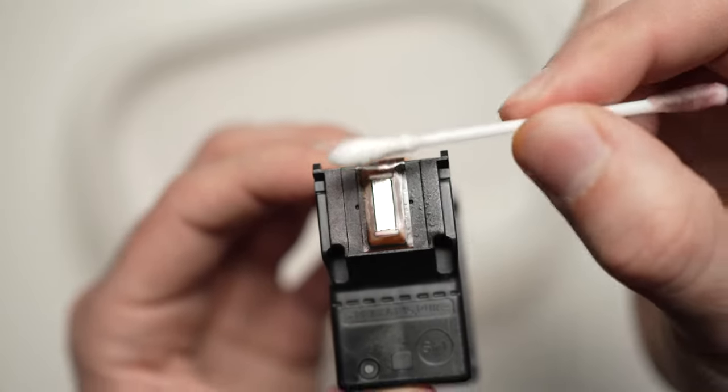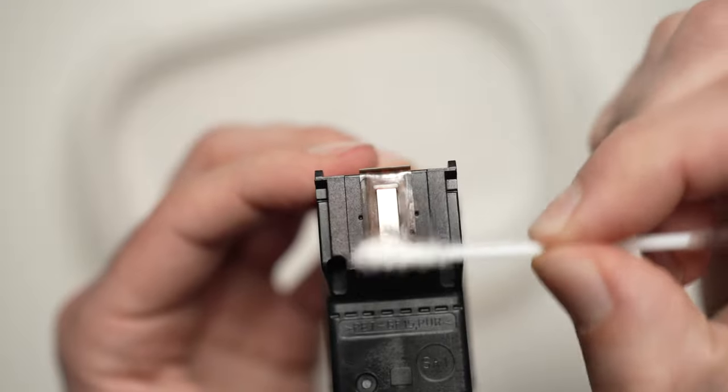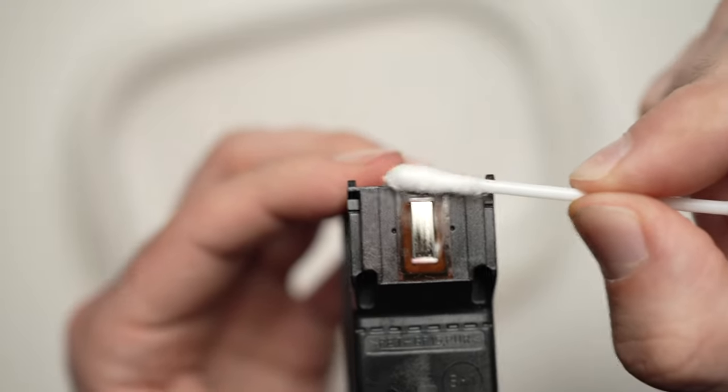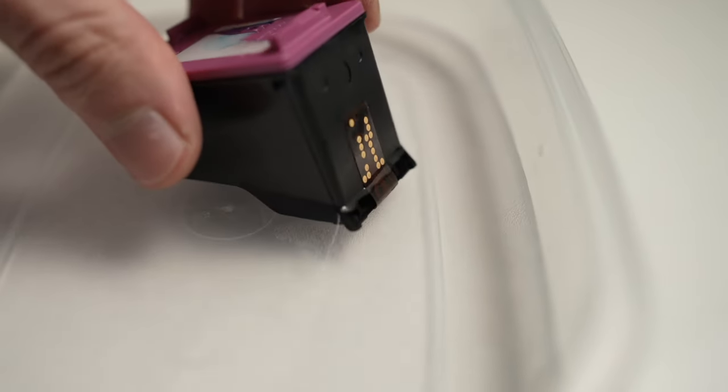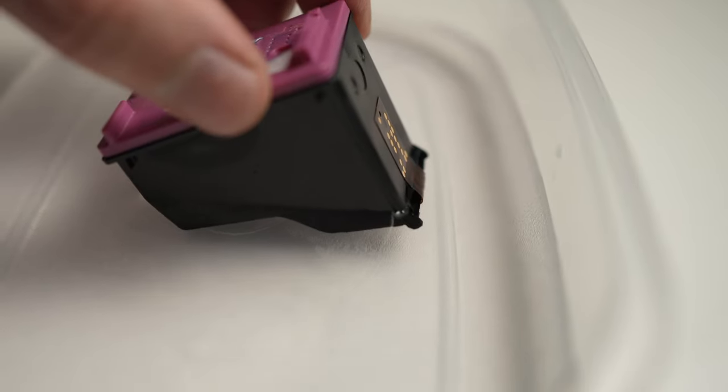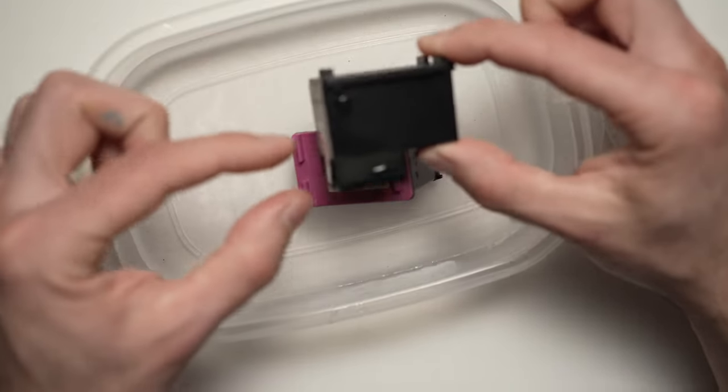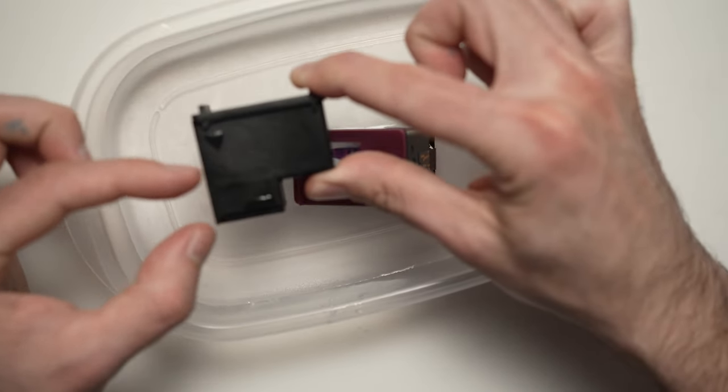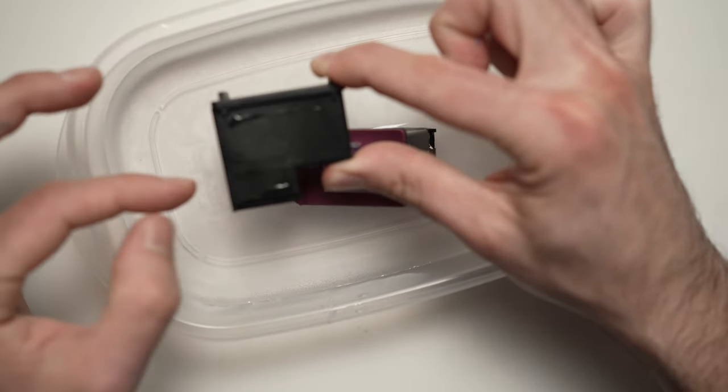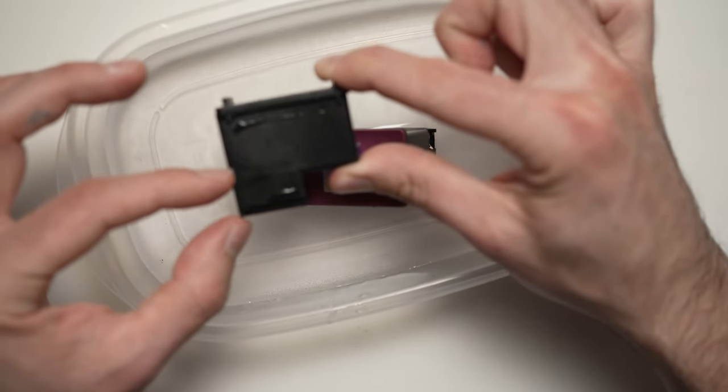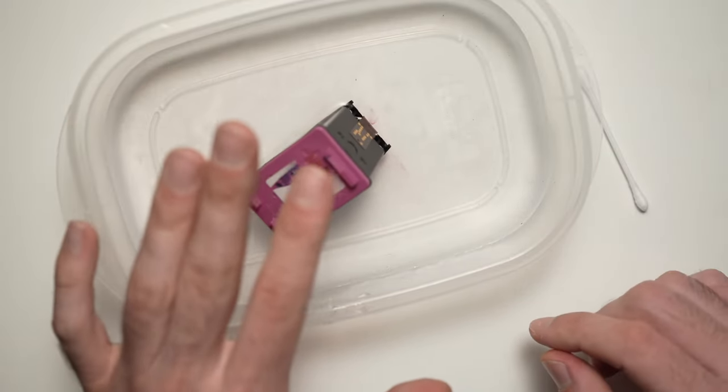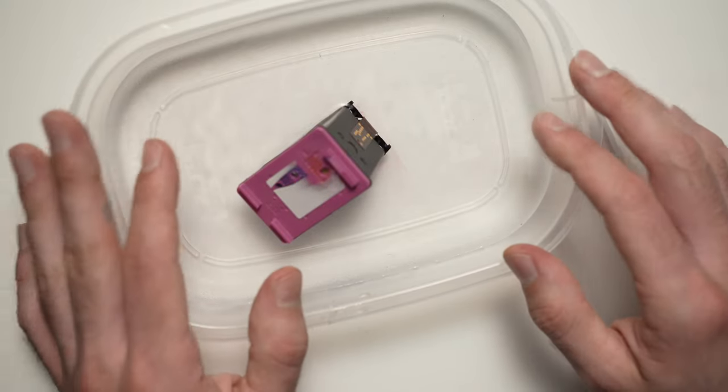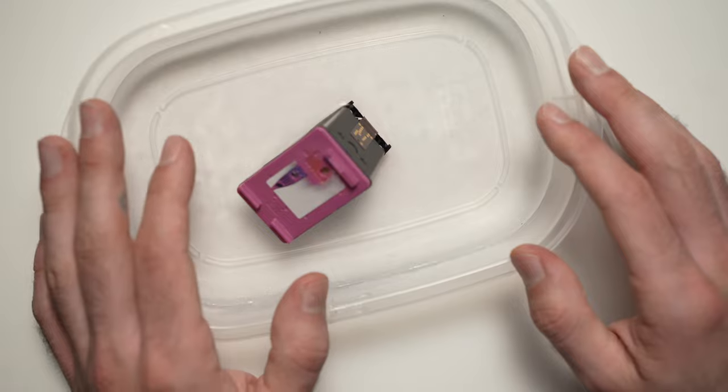Once you're done, you can use the dry side. Now take your cartridge and dip it in the water. Since it's not deep, the water should arrive at about a centimeter - this top part should not get in the water. Let it sit like this for about two minutes. If you're more patient, you can let it sit for five to ten minutes.